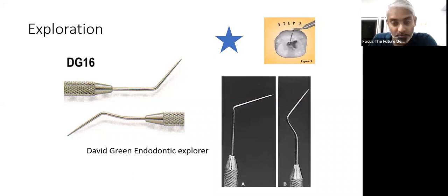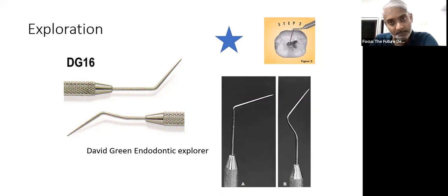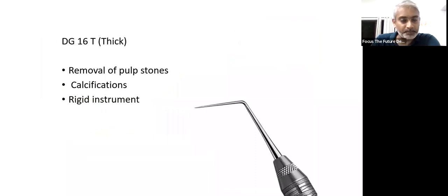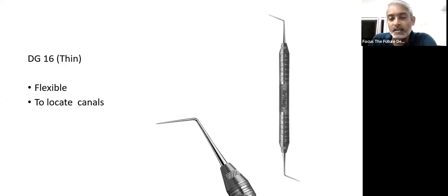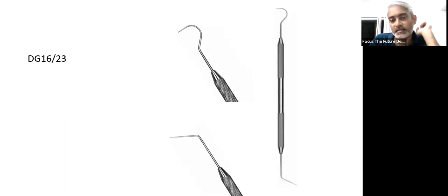You need to know the different types of instruments used in endodontics, starting from the DG-16 — even the full form of DG-16: David Green Endodontic Explorer — and why it is used. Sometimes it may be a picture-based question, showing the picture of the instrument and asking you to write what it is or its use. In DG-16 itself, we have different classifications and different types, all of which we need to cover. These things will be taken elaborately in the classes. There is nothing to worry about.